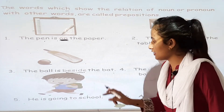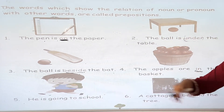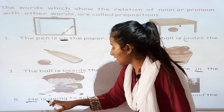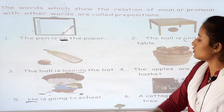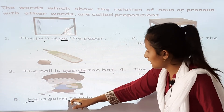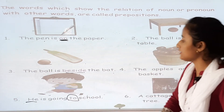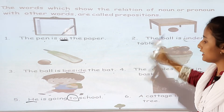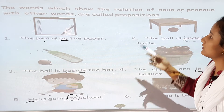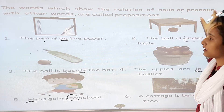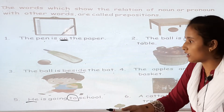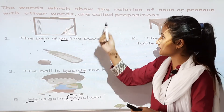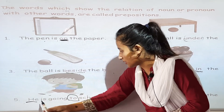Now, he is going to school. 'He' is a pronoun. So with the preposition word 'to', it shows the relations of a pronoun with another word — he is going to school. The word which shows the relations of a noun or a pronoun with other words — that is called a preposition.